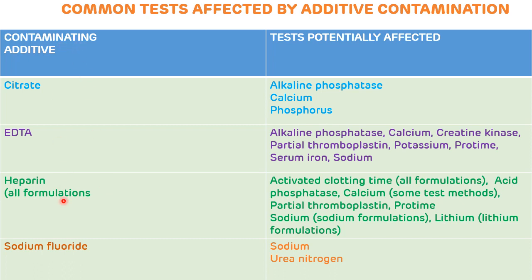If the contaminating additive is heparin, it can affect activated clotting time, acid phosphatase, calcium, partial thromboplastin time, prothrombin time, sodium if there is a sodium formulation present, and lithium if there is a lithium formulation present. If the contaminating additive is sodium fluoride, it can affect sodium as well as urea nitrogen.